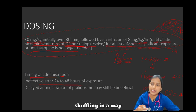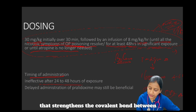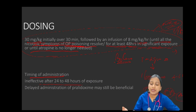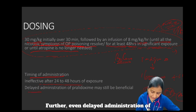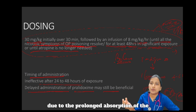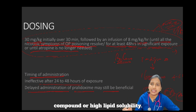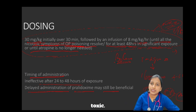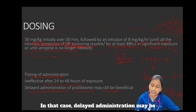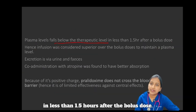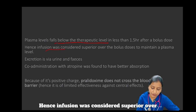Aging refers to dealkylation of the phosphorylated enzyme, leading to electron shuffling in a way that strengthens the covalent bond between the organophosphorus compound and the acetylcholinesterase enzyme to a point where even pralidoxime is unable to reactivate the enzyme. However, even delayed administration of pralidoxime may be beneficial due to prolonged absorption of the compound, high lipid solubility, or when the metabolite of OP poisoning is itself toxic. Plasma levels fall below the therapeutic level in less than 1.5 hours after a bolus dose, hence infusion is considered superior.